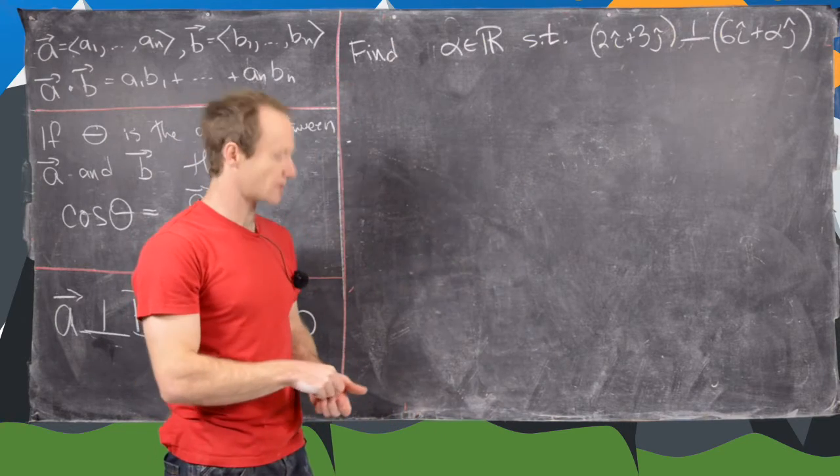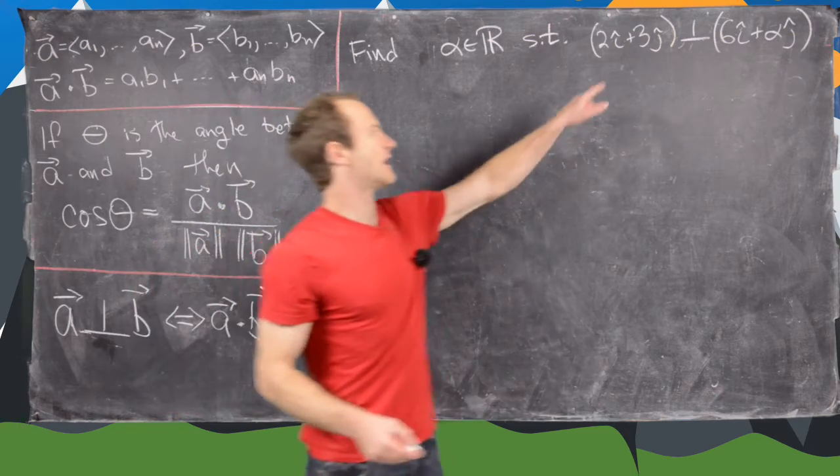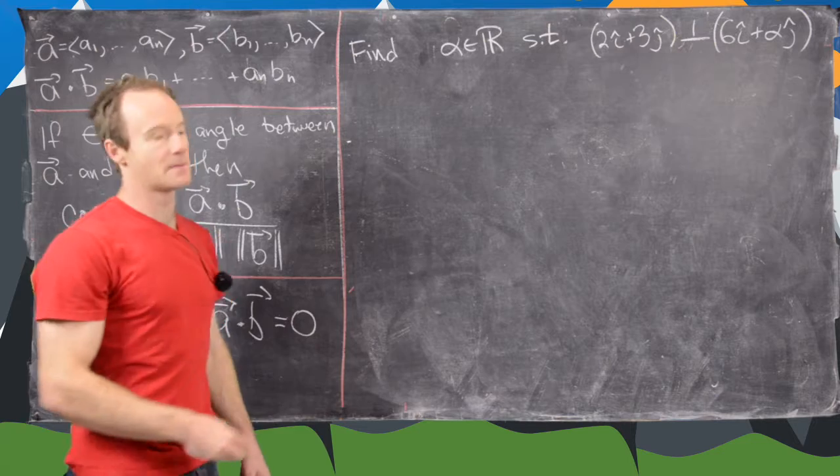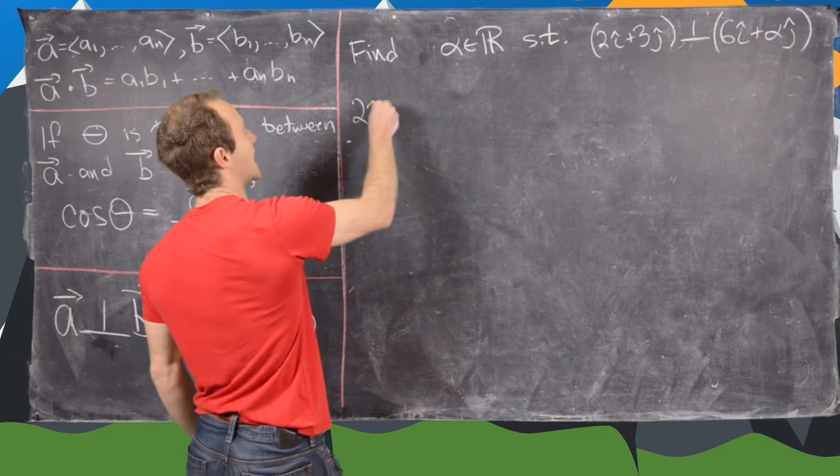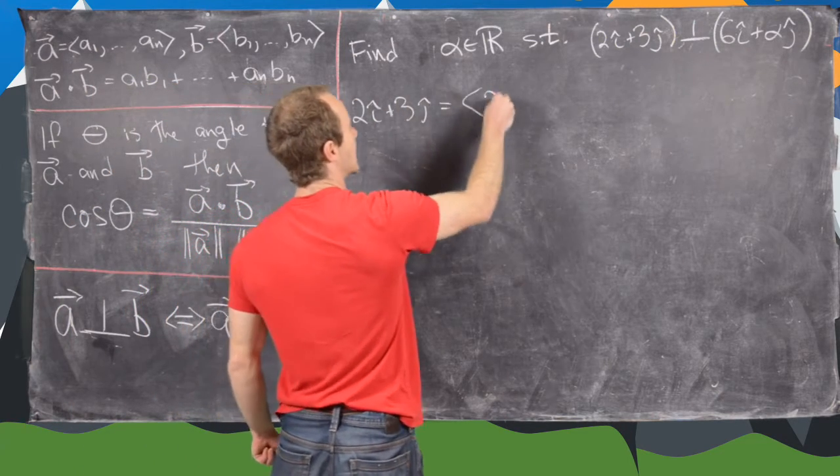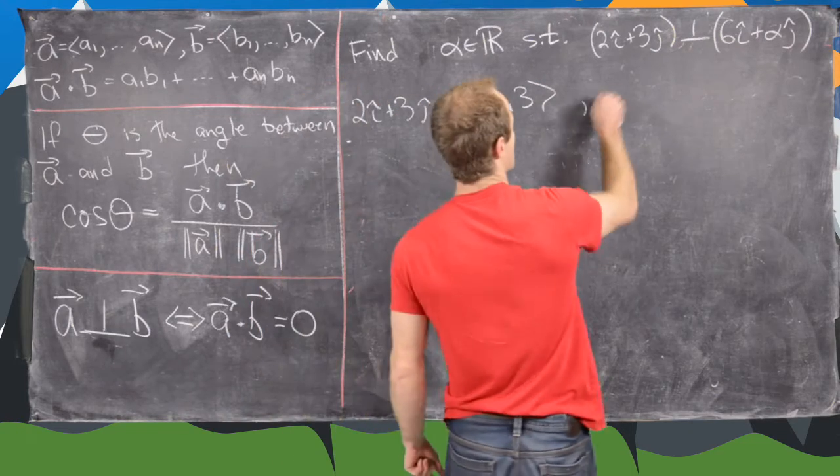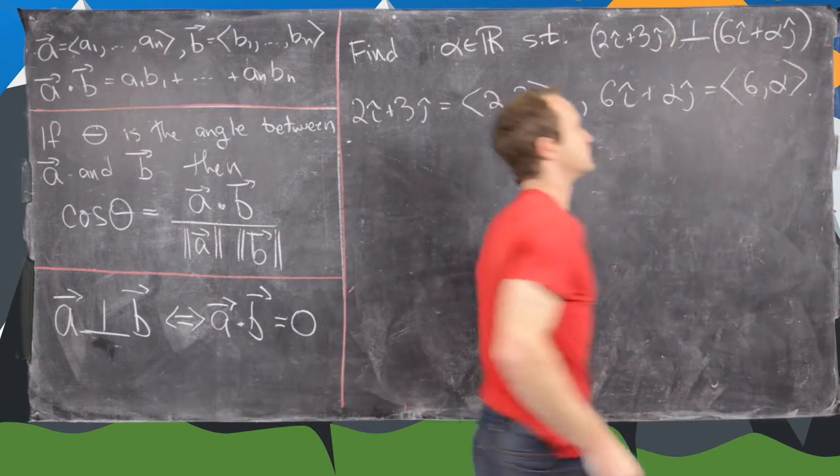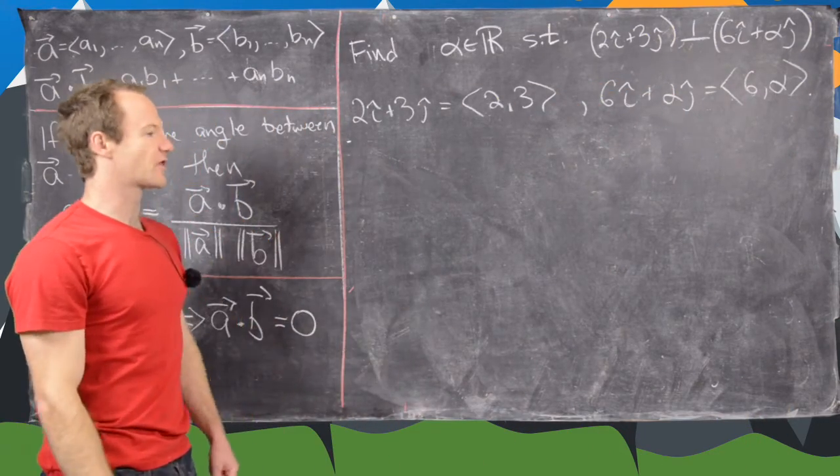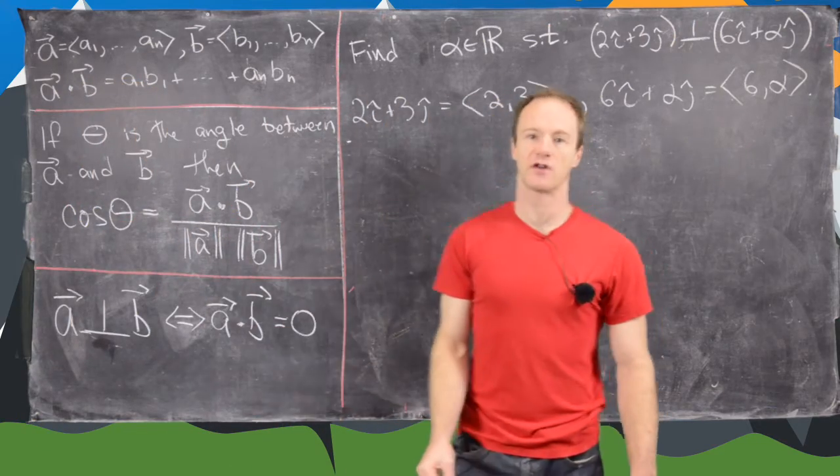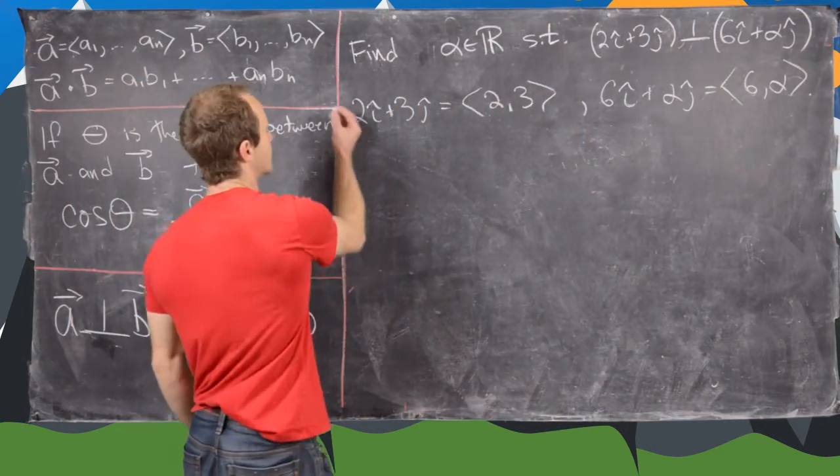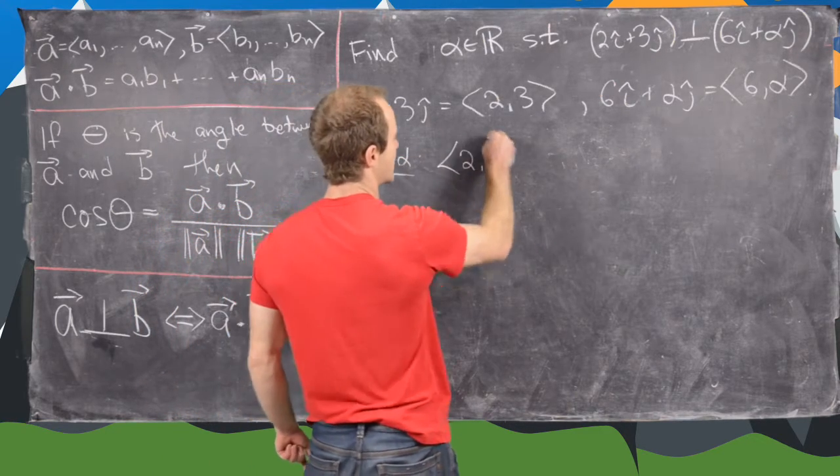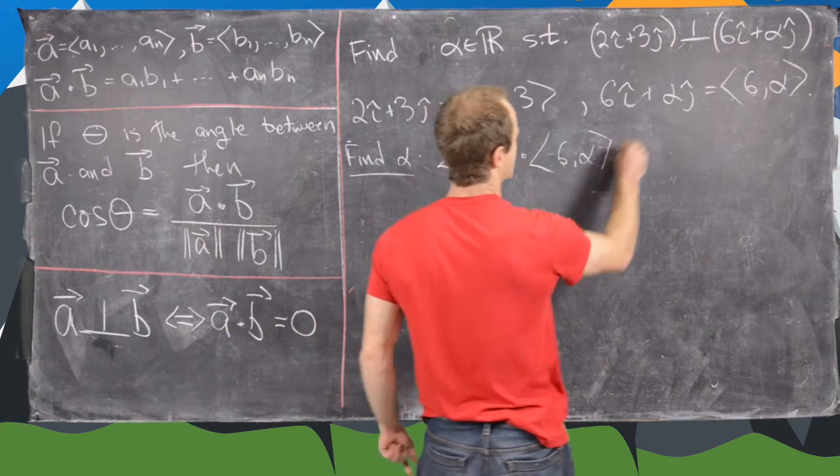So here we have another pretty similar example. We want to find real numbers alpha so that this vector 2i plus 3j is orthogonal to 6i plus alpha j. So let's recall that we can write 2i plus 3j component-wise as 2, 3, and we can write 6i plus alpha j component-wise as 6, alpha. And so in order for those to be orthogonal, we want to use this classification so their dot product has to be equal to 0. So in other words, we want to find alpha such that 2, 3 dot 6, alpha equals 0.